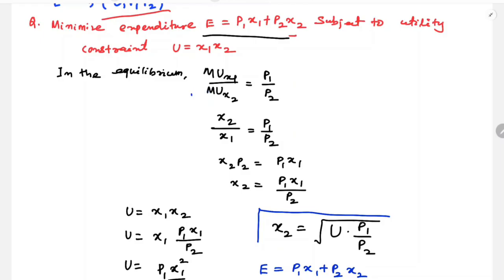From the equilibrium conditions, MUx1 divided by MUx2 equals P1 by P2. MUx1 and MUx2 are the partial derivatives of the utility function — this gives us the indifference curve slope condition.